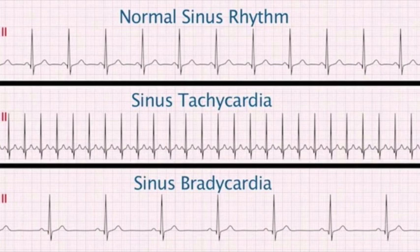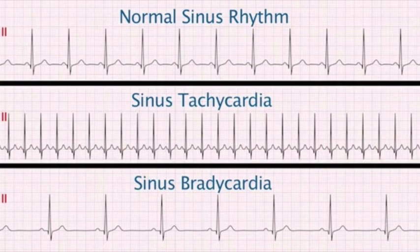Diagnosis of sinus arrhythmia on EKG: normal appearing P waves, beat-to-beat variation in P-to-P interval greater than 0.12 seconds, shorter intervals during inspiration, longer intervals during expiration. No management is needed in most cases — it's a normal variant. If symptomatic bradycardia occurs, atropine is first line; epinephrine, dopamine, and transcutaneous pacing are second line.